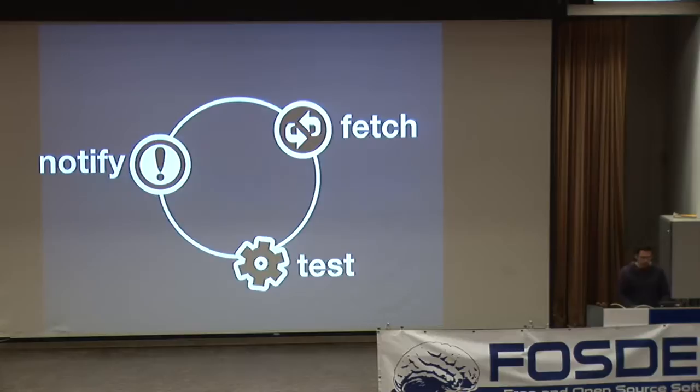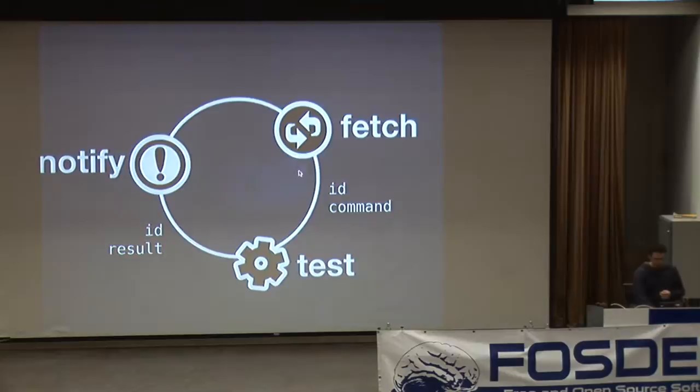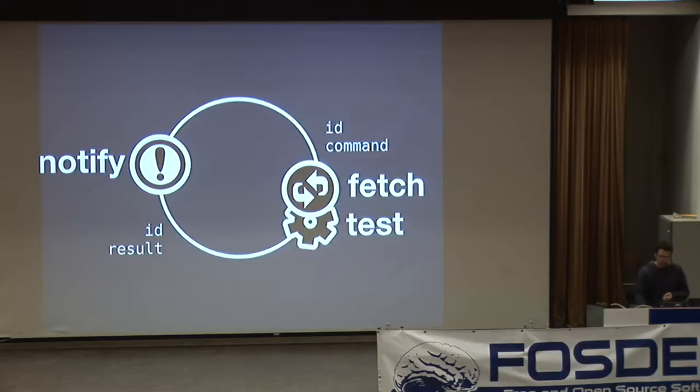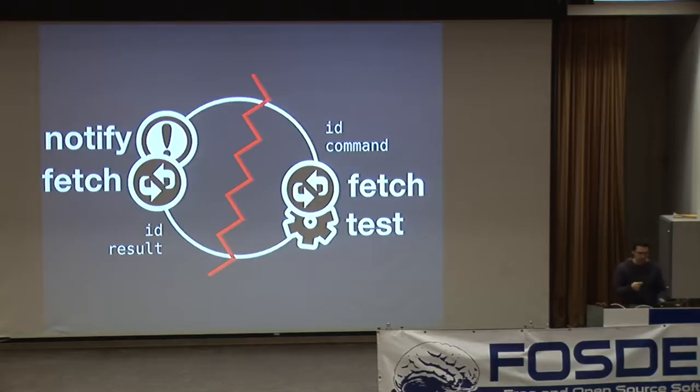Once we recognize it's an embarrassingly parallel task, you can start thinking about the common data that needs to be sent between all these different components. In the fetch and test phases, we're sending around an ID of a particular check and the command that we need to execute. In the notify phase we're sending the same ID and the result we got after executing that test.